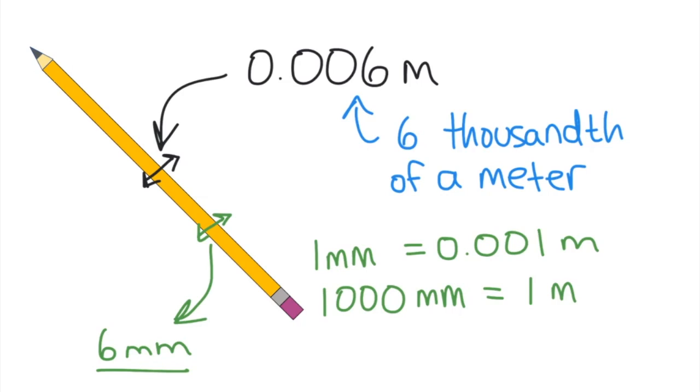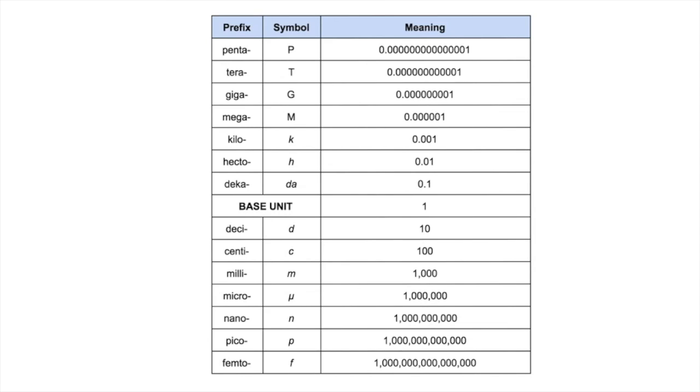The metric system is a decimal base prefix system. That is, a unit can be multiplied by a factor of 10 by just changing the prefix. You can use a chart like this one to keep track of the prefixes.